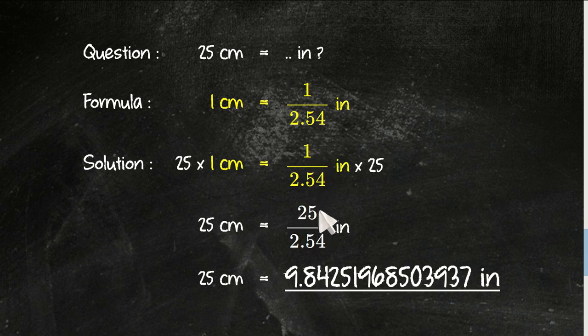So, now we have 25 here. Because 25 times 1 equals 25. 25 over 2.54. 25 divided by 2.54 equals 9.84251968503937.